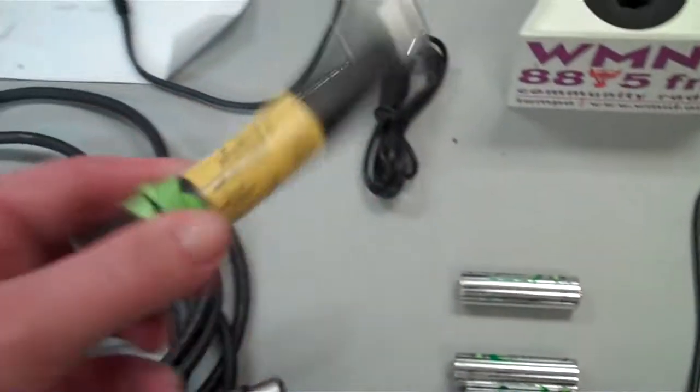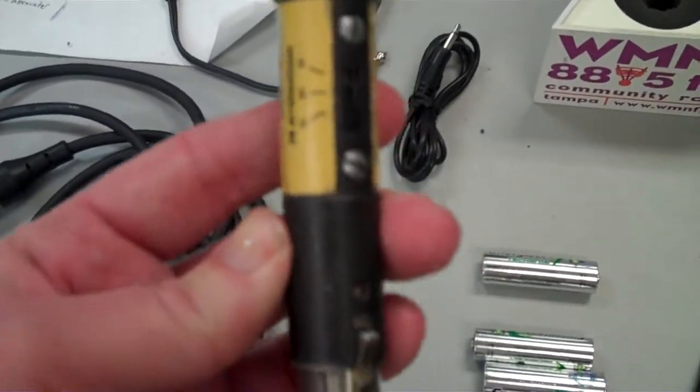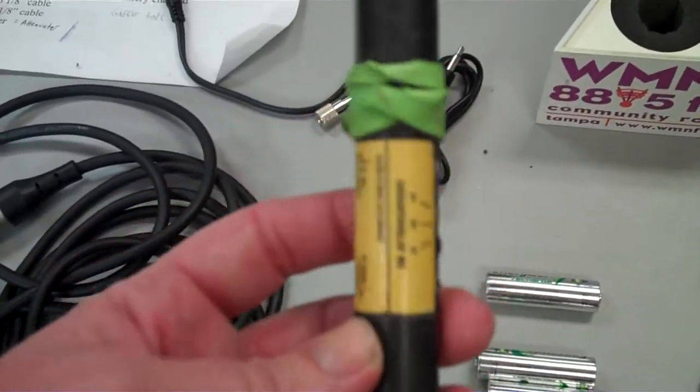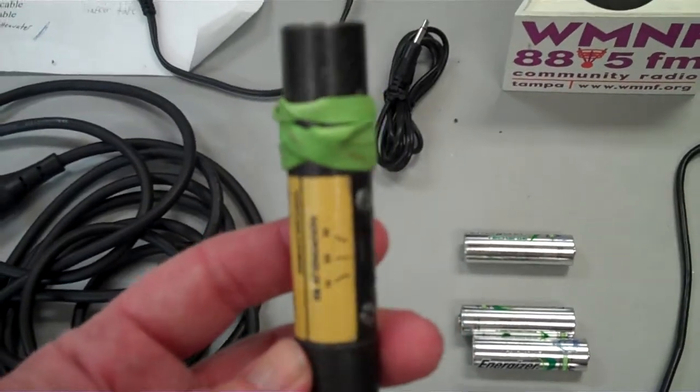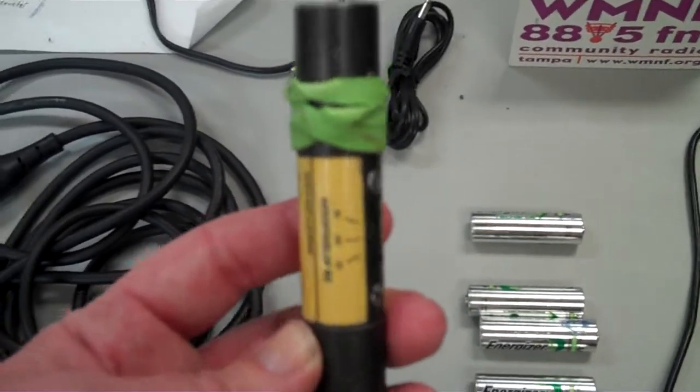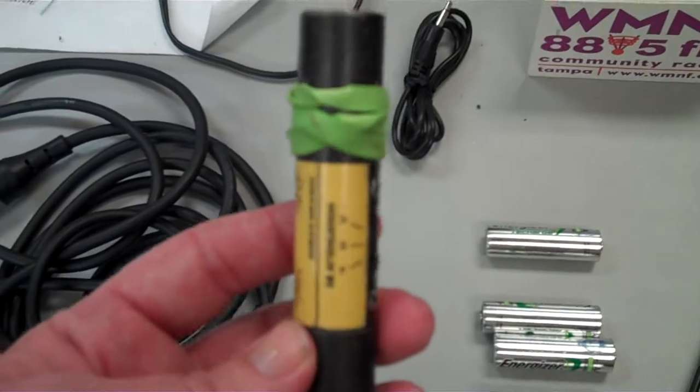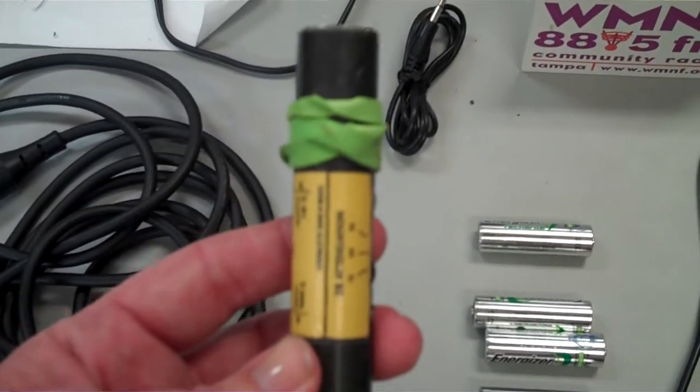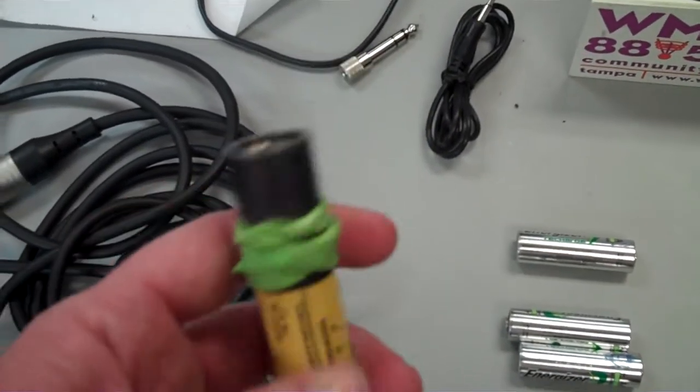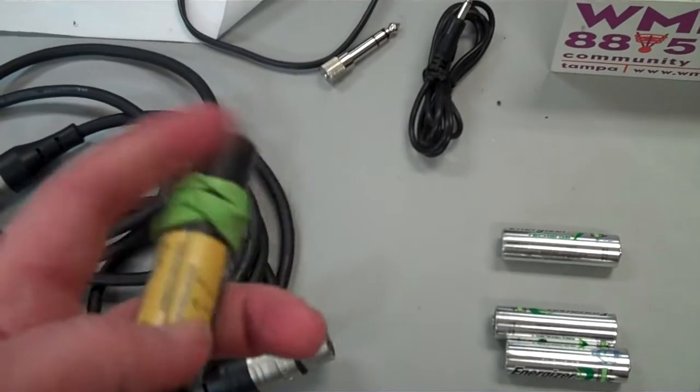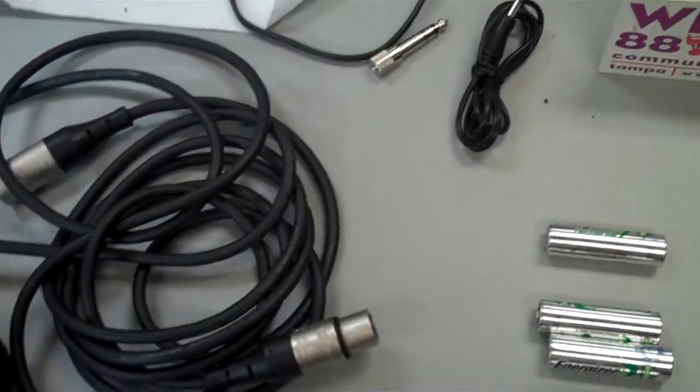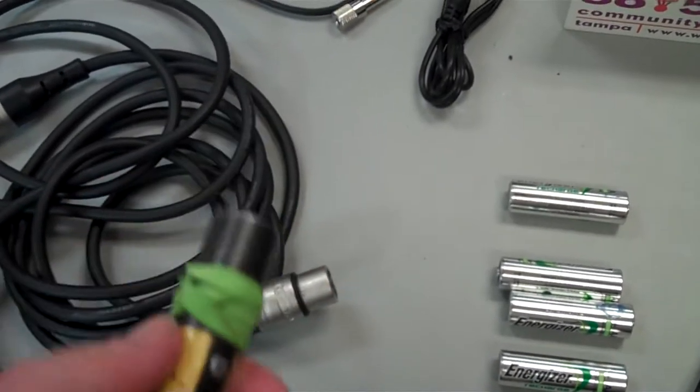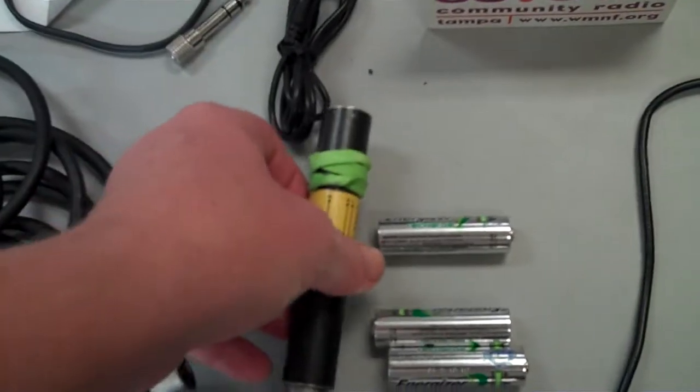Also a dampener, also called an attenuator. This is something that when you're plugging in to an audio system—City Hall is a good example of this, County Commission, this also comes in handy. You plug this into the wall and then plug your XLR cable into it. What it does is it cuts down on distortion if there is some.